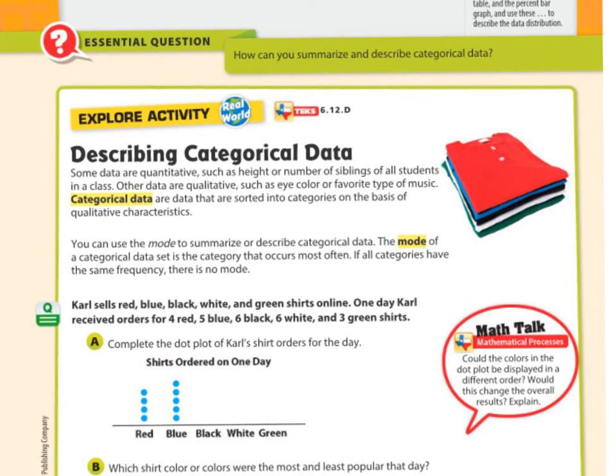When we talk about categorical data, we're talking about usually percent. You don't need to write any of this down right now. Categorical data are data that are sorted into categories on the basis of qualitative characteristics. Qualitative means like descriptions. You can use the mode to summarize or describe categorical data. The mode of a categorical data set is the category that occurs most often. If all categories have the same frequency, there is no mode.